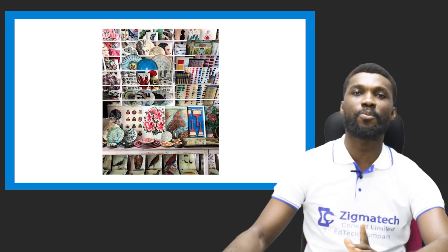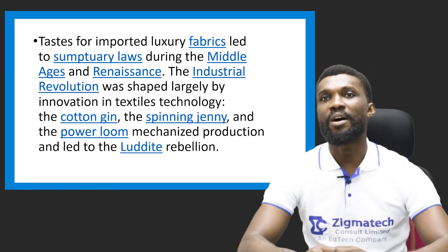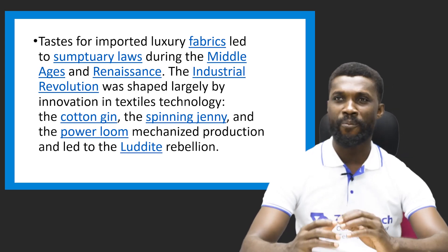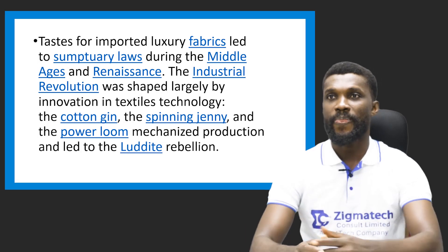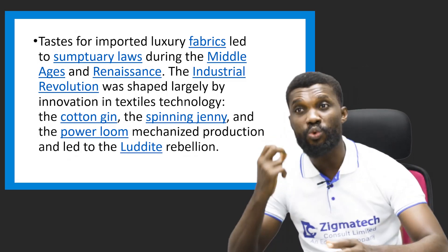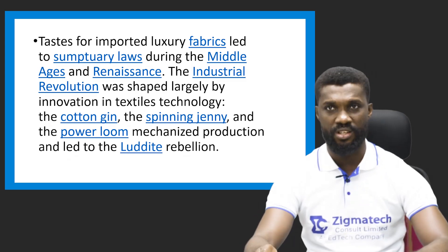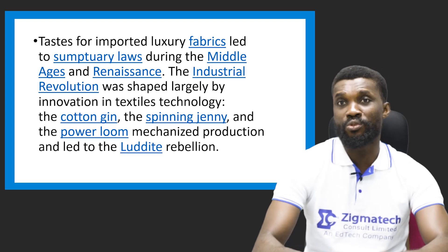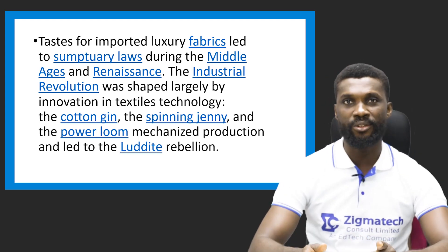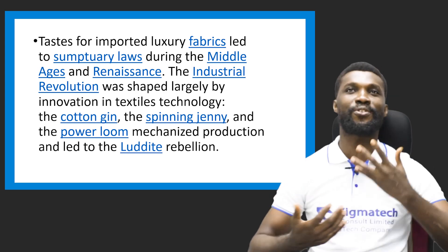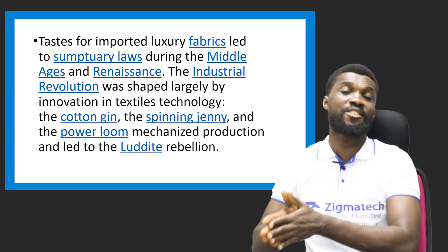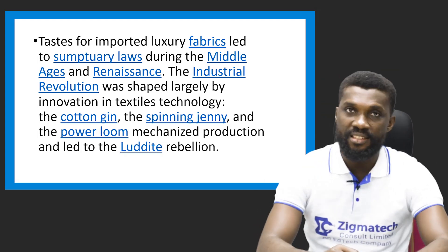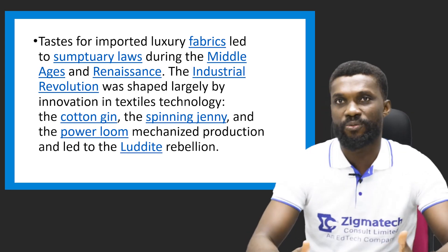Imported luxury fabric led to laws that kindled the movement of trade. Down through the Middle Ages to the Renaissance, the industrial revolution was shaped largely by innovations in textile technology. The spinning jenny and the power loom — a mechanized way of producing textile — led to the Luddite rebellion. When machines replaced traditional methods, it affected many people and created a revolution that caused the Luddites' rebellion.